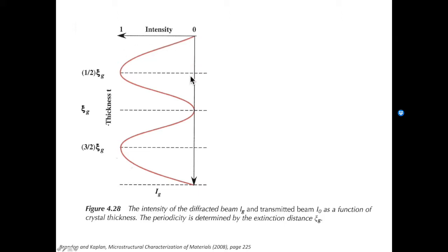As t increases, the intensity of the diffracted beam initially increases, then falls back and eventually reaches 0. The thickness value at which intensity returns to 0 is called the extinction distance, ξc. This means that even when you tilt your crystal to the two-beam condition with one set of planes strongly diffracting, if the sample thickness equals ξc, the diffracted spot intensity will be zero and you will not see the diffracted spot.